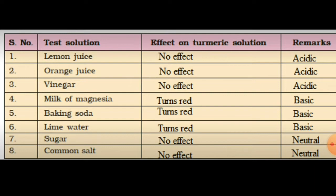For lemon juice and orange juice, there is no effect on the turmeric paper, so these are acidic in nature. For vinegar, there is also no effect, so it is acidic. For milk of magnesia, the turmeric color changes from yellow to red, so it is basic in nature. For baking soda and lime water, the turmeric color also changes from yellow to red, so both are basic. For sugar and common salt solution, there is no color change in turmeric — and as seen in the litmus test, these solutions show no effect on red or blue litmus either — so both are neutral in nature.